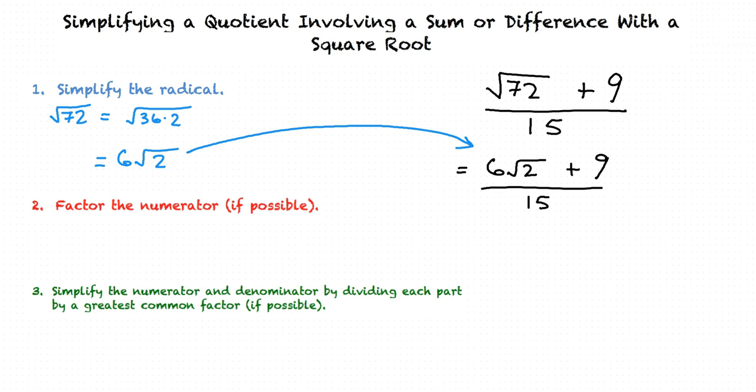Now we will follow Step 2. The greatest common factor that can be factored out of the numerator, 6 radical 2 plus 9, is 3. Note that there won't always be a greatest common factor in the numerator — if that is the case, then the numerator is already simplified enough.